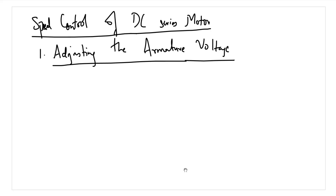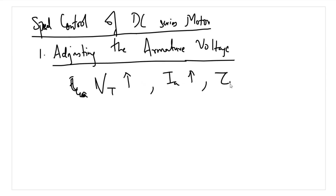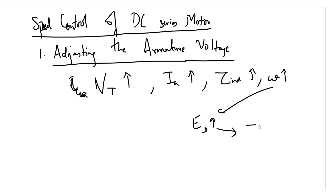By increasing the armature voltage in a DC series motor, the current I increases, inducing increased torque, which increases omega. The increased omega raises back EMF Eb, which then causes the current to fall back. The induced torque returns to balance at a higher speed. This is the same effect as discussed for DC shunt motors.